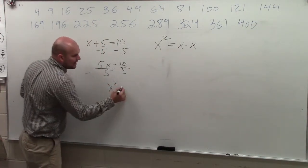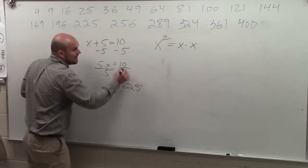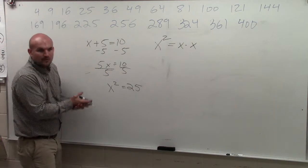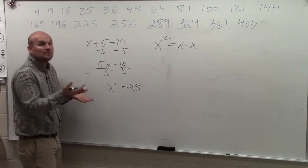Well, then, if we have x squared equals 25, we know x squared is a number times itself. What is the inverse operation of x squared? What is the inverse operation of x squared? It's what we call the square root.